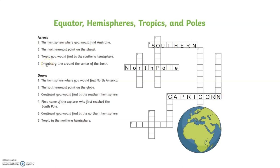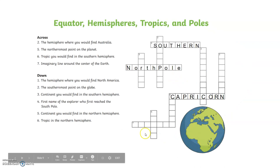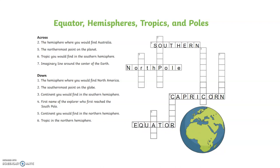Then we have number seven across. The question is: imaginary line around the center of the earth. Remember, we have three imaginary lines, but in the very center we have one imaginary line and it's called the equator. So for number seven across, we're going to spell 'equator.' All right, now we are on to the ones that go down.